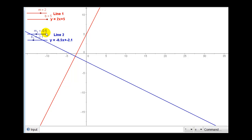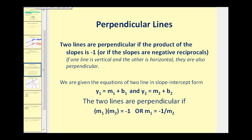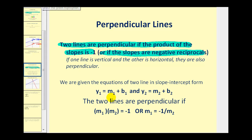That leads us to the condition that must be met for two lines to be perpendicular. Their slopes must be negative reciprocals of one another, and if we multiply the two together, it must equal negative one. Two lines are perpendicular if the product of the slopes is negative one, or if the slopes are negative reciprocals of one another. So if both lines are in slope-intercept form, m₁ times m₂ must equal negative one, or m₁ must equal negative one over m₂.